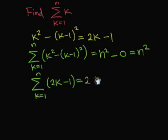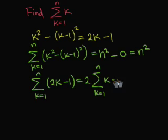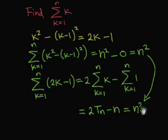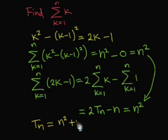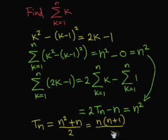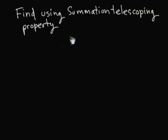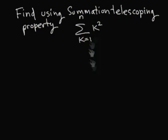So applying the properties of summation mentioned in the prior lecture, we get 2 times the summation from k equal 1 to n of k, minus the summation from k equal 1 to n of 1, equal to 2 times t sub n minus n, equal to n squared. And therefore, t sub n is equal to (n squared plus n) over 2, which is equal to n times (n plus 1) over 2. So applying the summation telescoping property to find the summation from k equal 1 to n of k squared.